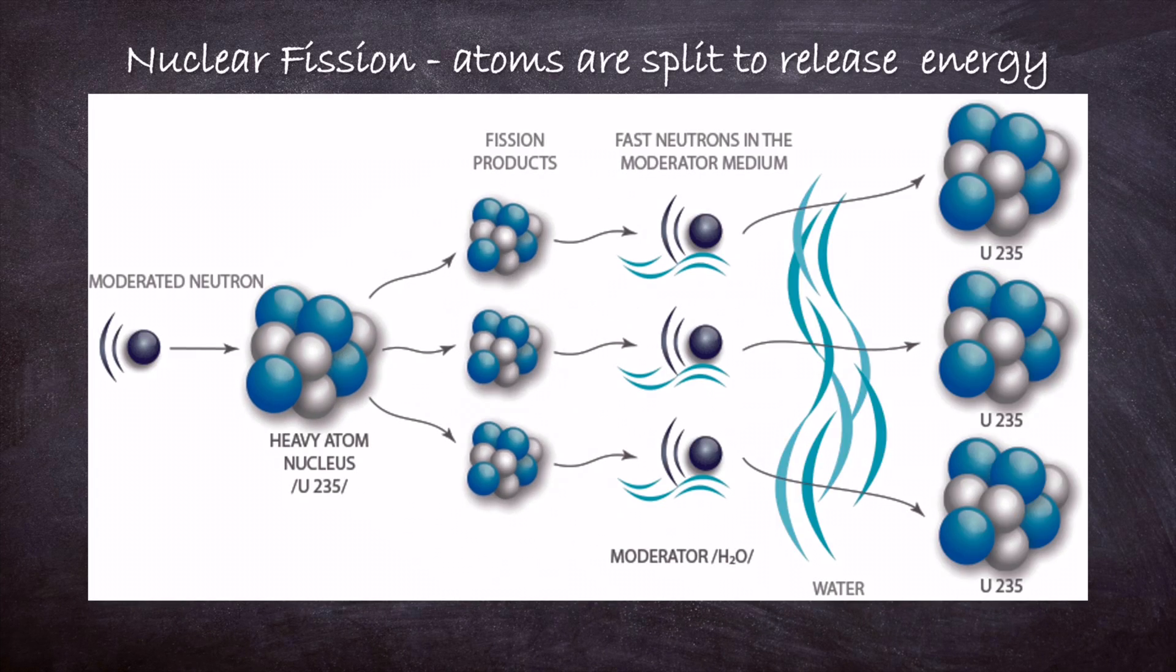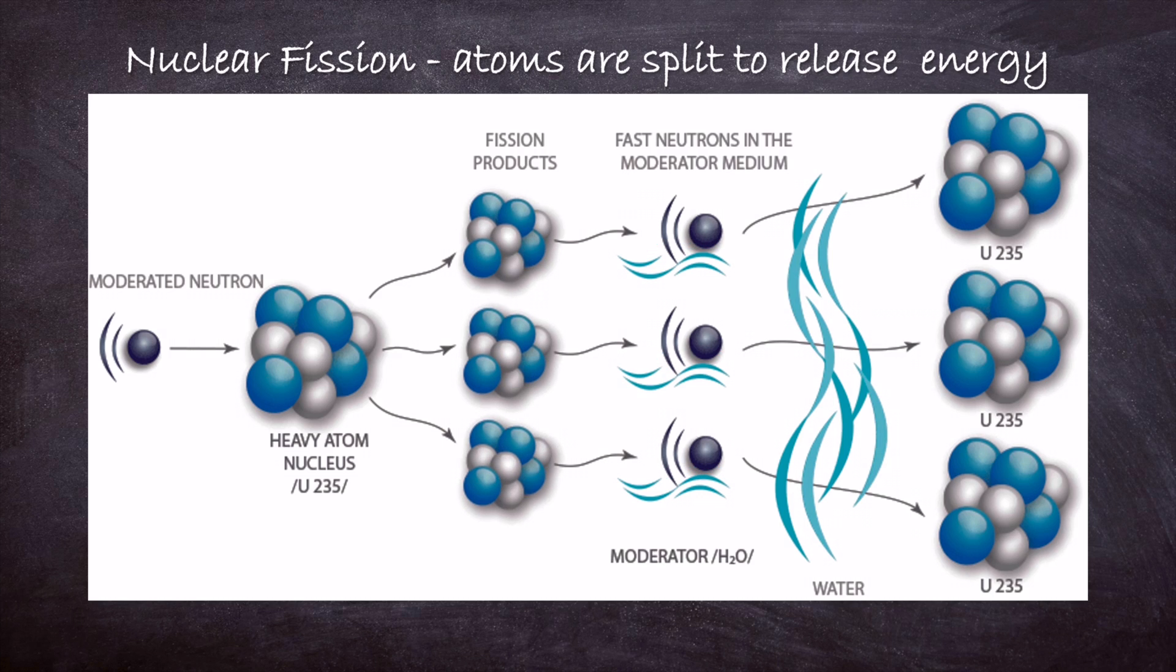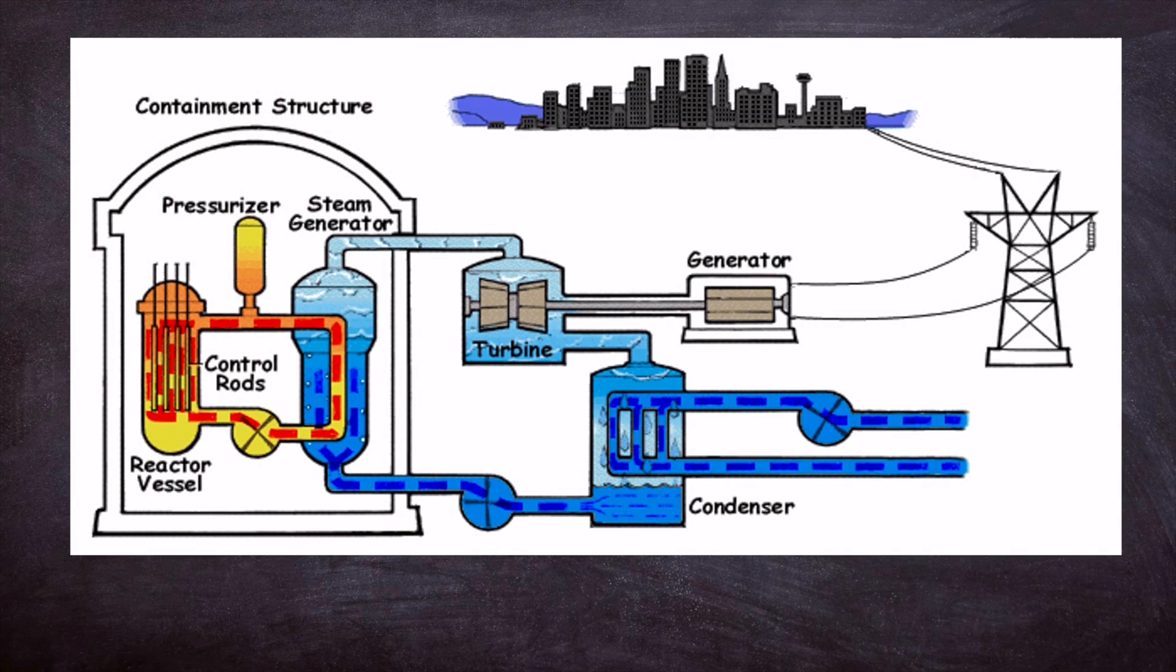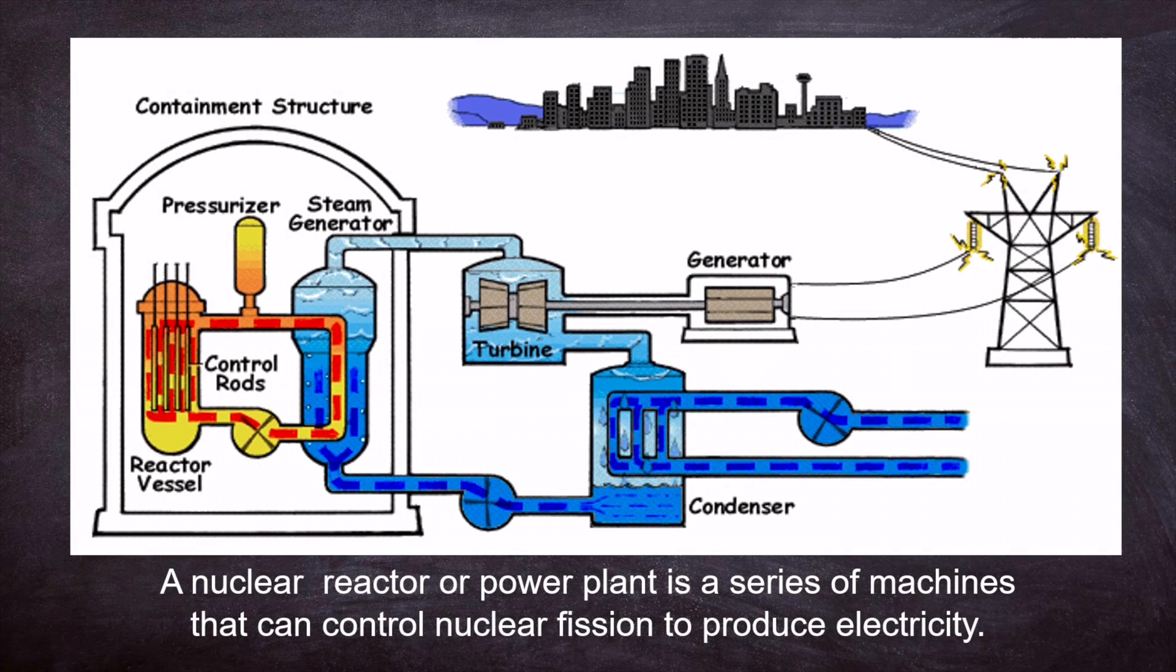In the process of nuclear fission, atoms are split to release that energy. A nuclear power plant is a series of machines that can control nuclear fission to produce electricity.